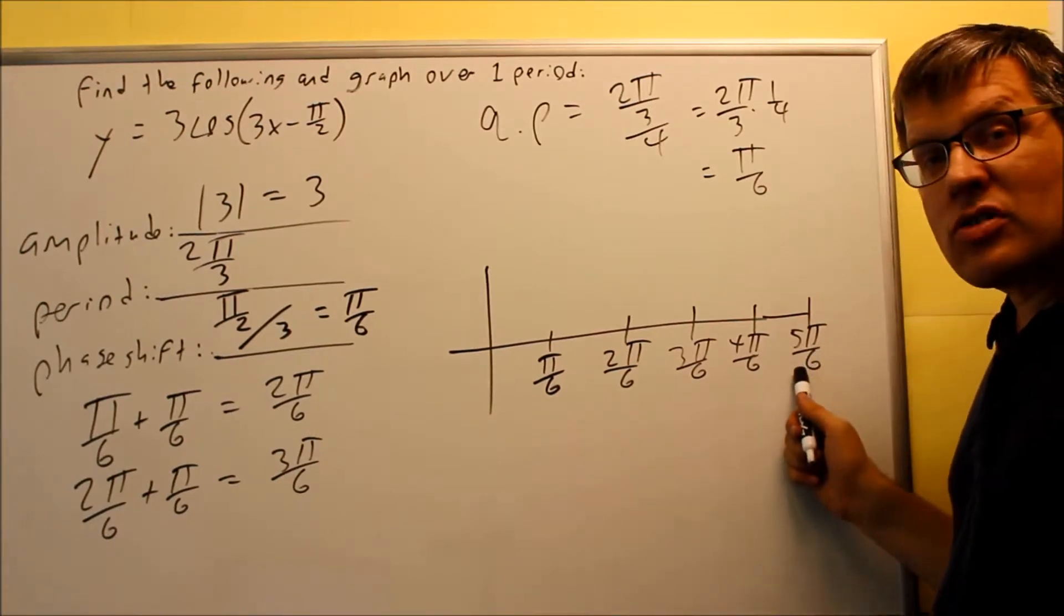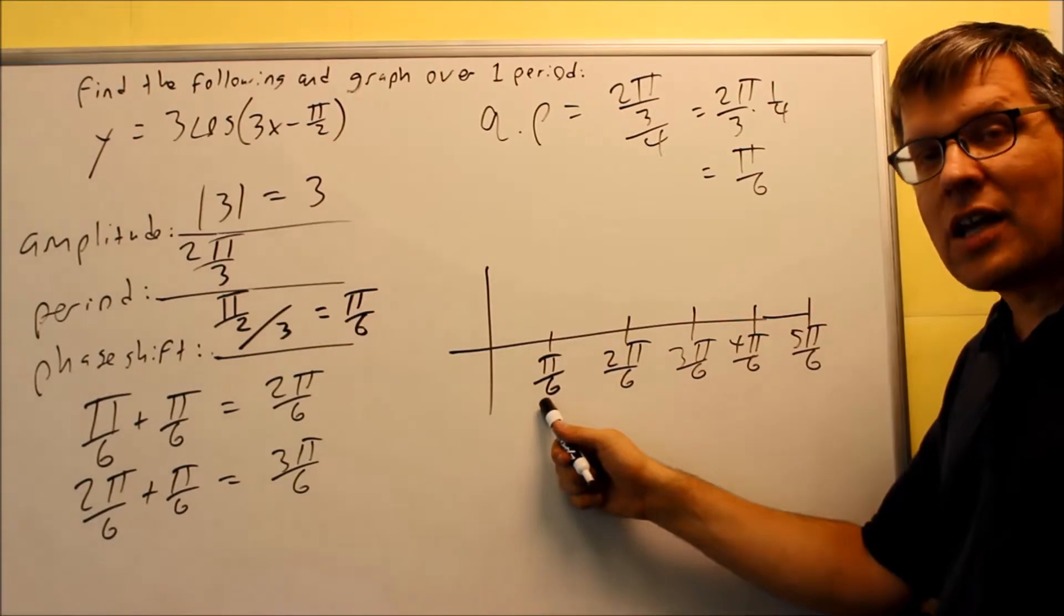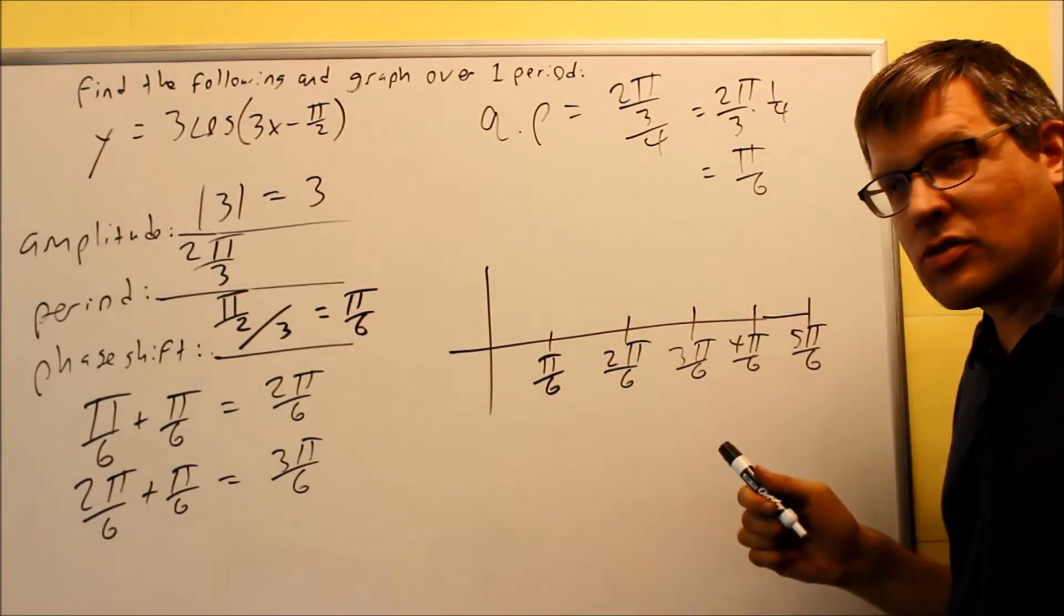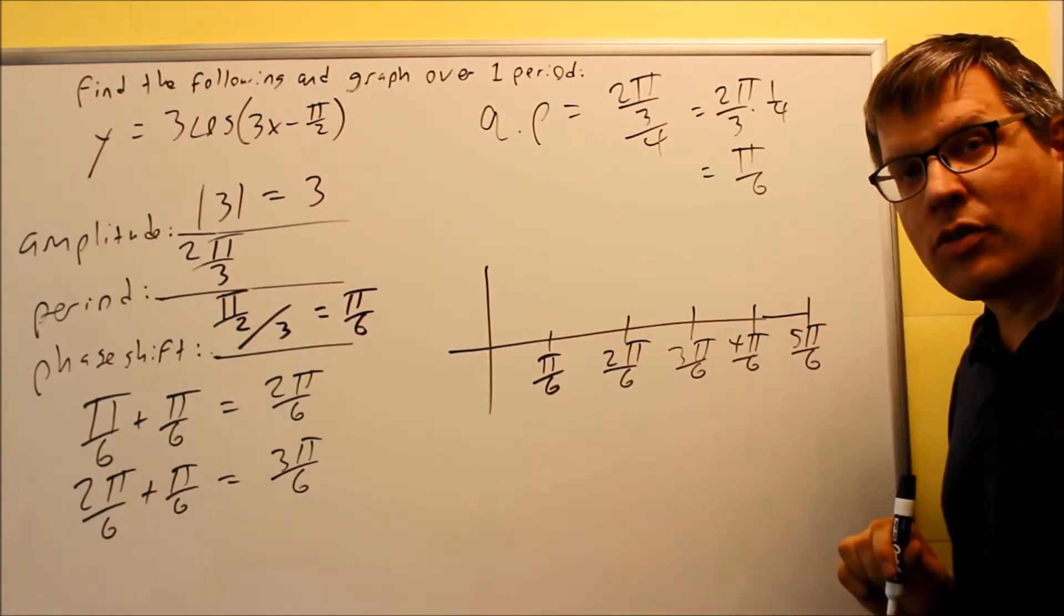If I take 5π over 6 and subtract π over 6 from it, I get 4π over 6, and 4π over 6 happens to be my period, which is 2π over 3.